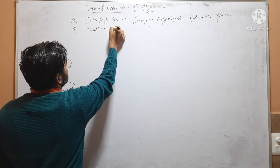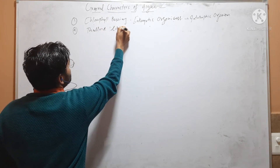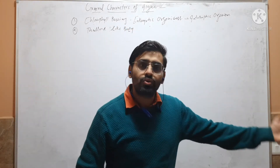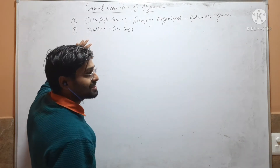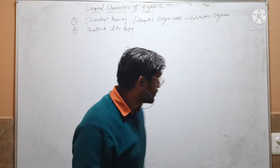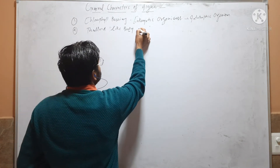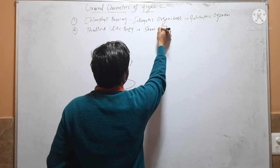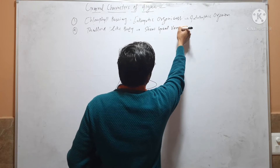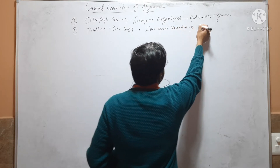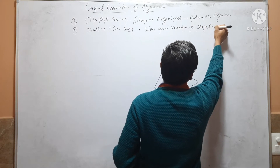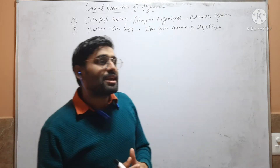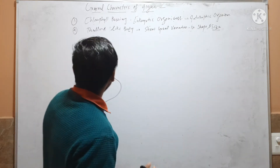Second, algae have a thallus-like body because their body is not differentiated into true root, shoot, and leaves. It is a simple thallus — a primitive type of plant body — but this thallus shows great variation.